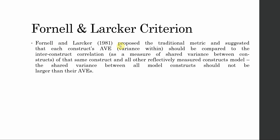Fornell and Larker criterion. Fornell and Larker in 1981 proposed a traditional metric and suggested that each construct's AVE — the average variance extracted — should be compared to the inter-construct correlation of the same construct with all the other reflectively measured constructs in the model. The shared variance between all model constructs should not be larger than the AVE. Within-construct variance must be higher than the shared variance.